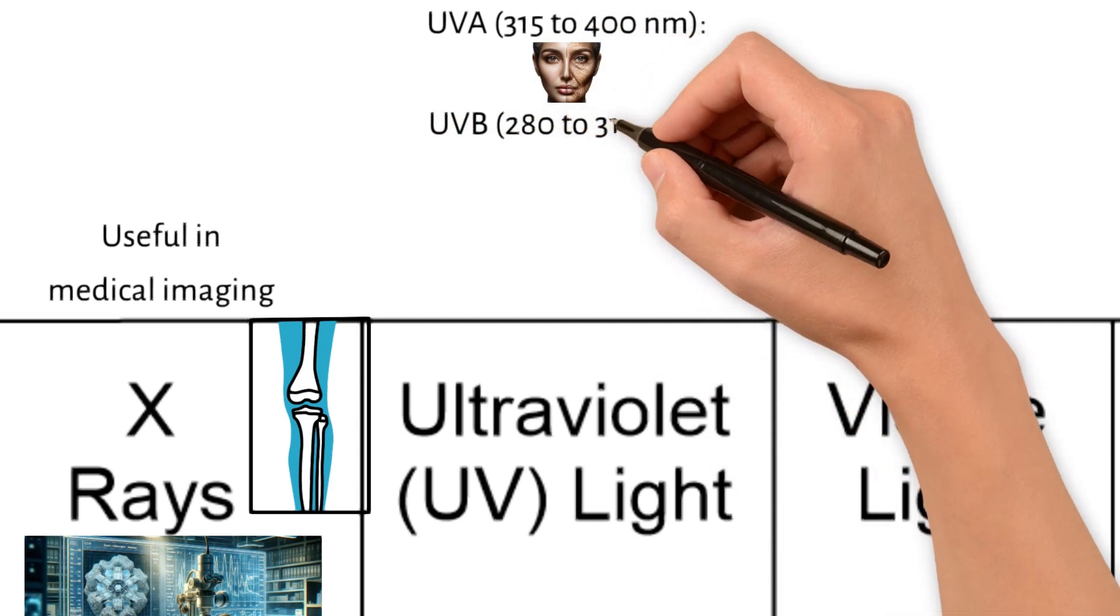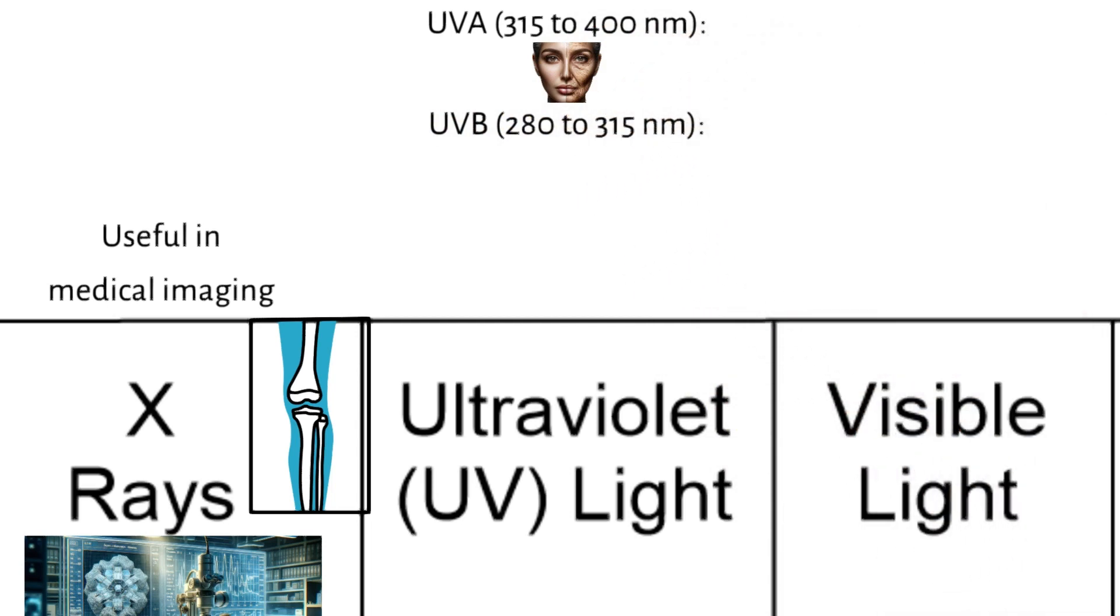UVB is 280 to 315 nanometers. It's more energetic than UVA. UVB is particularly absorbed by the ozone layer, but can still reach the Earth's surface, causing sunburn and playing a key role in the development of skin cancer.